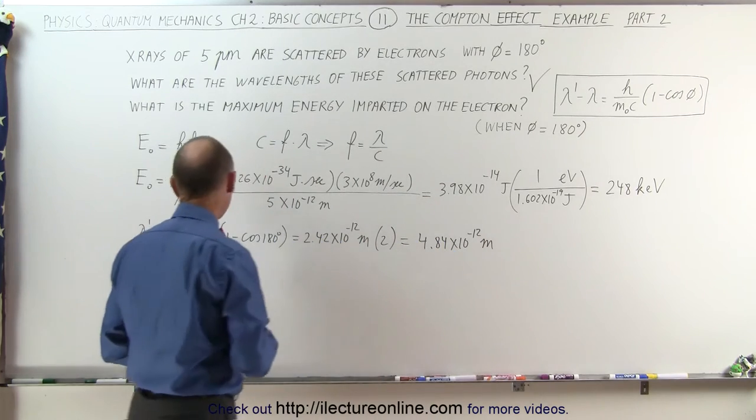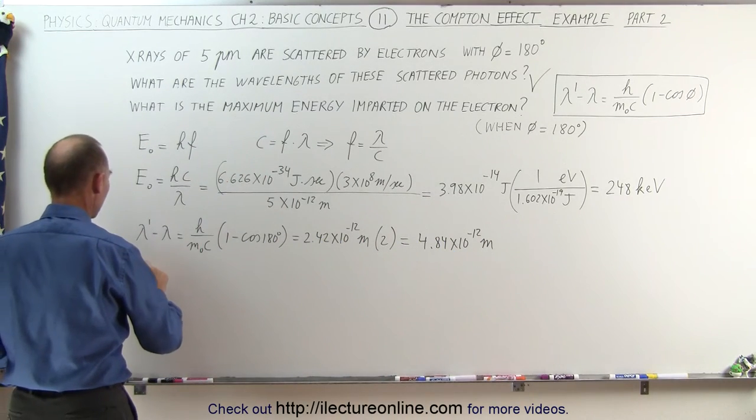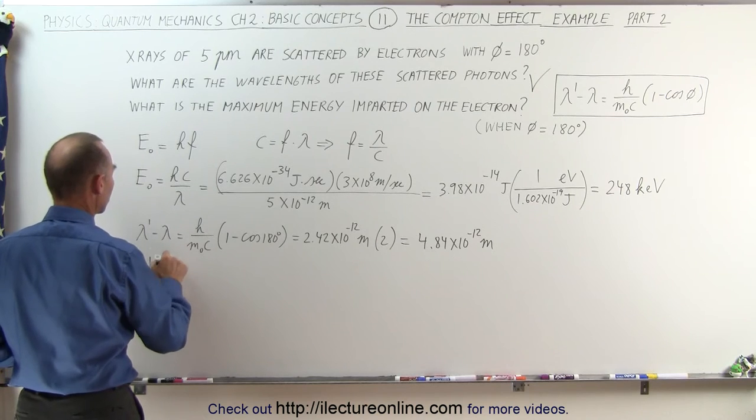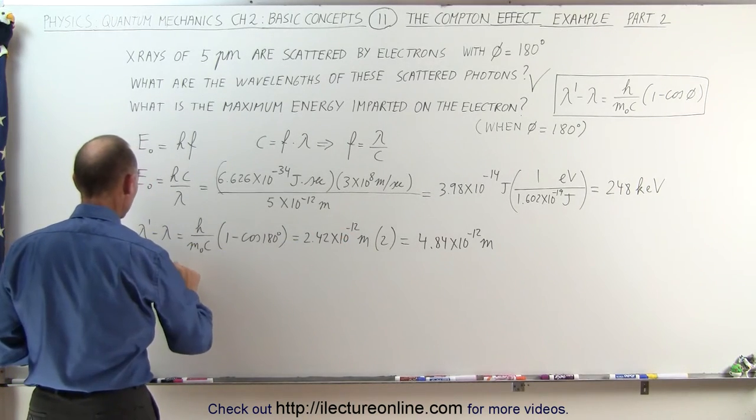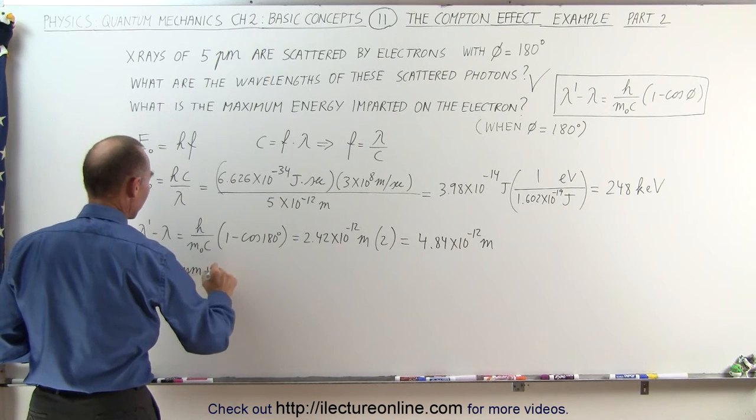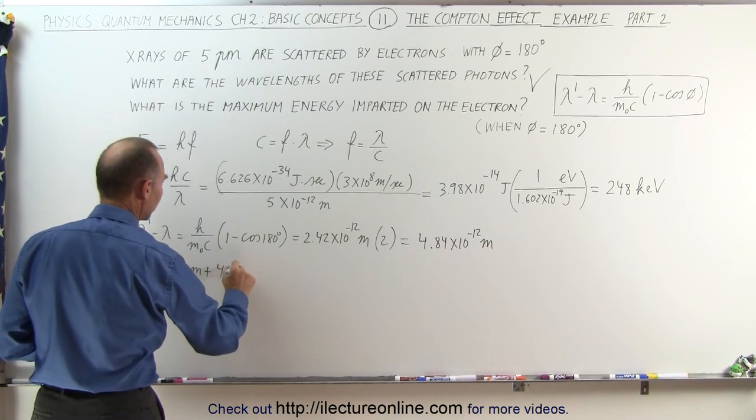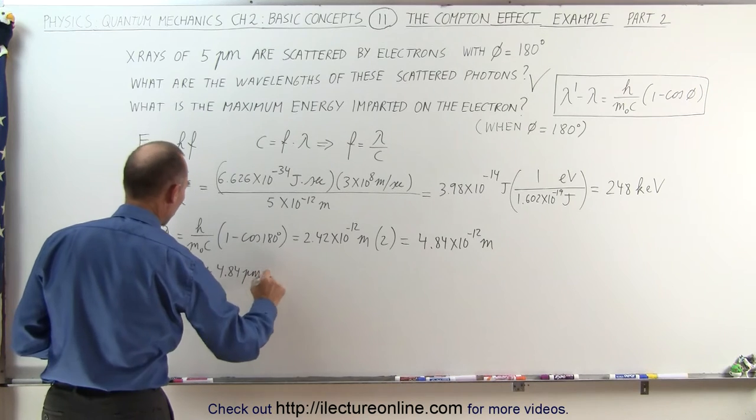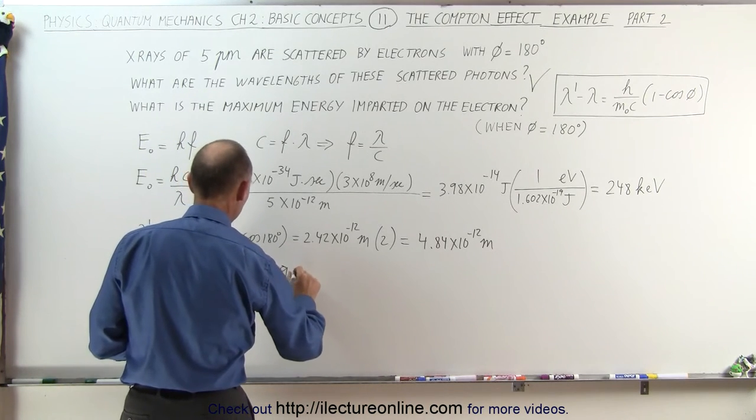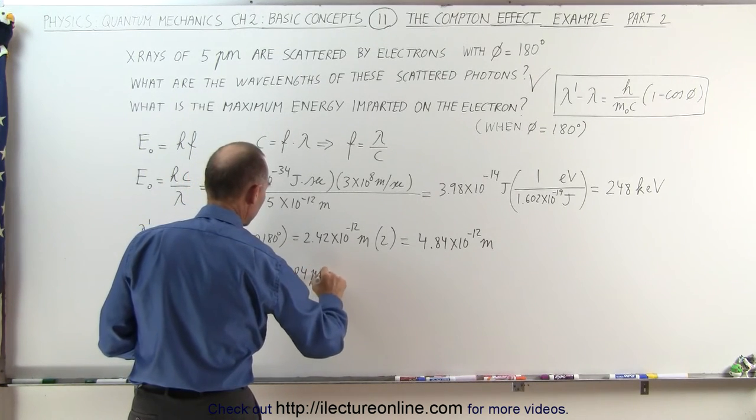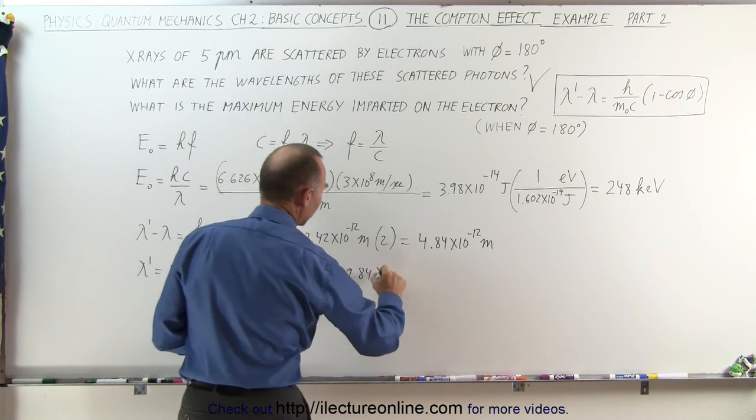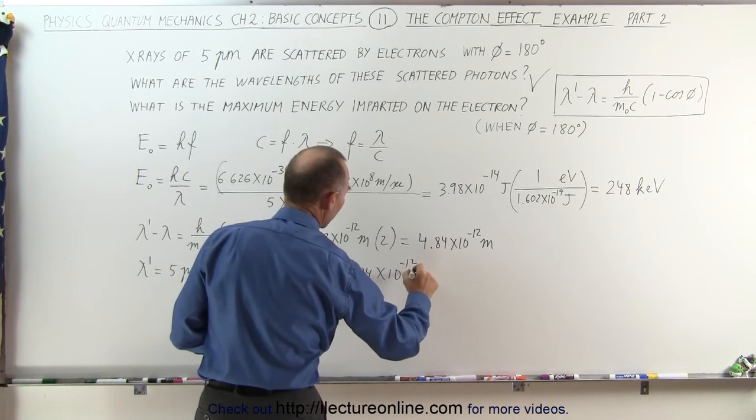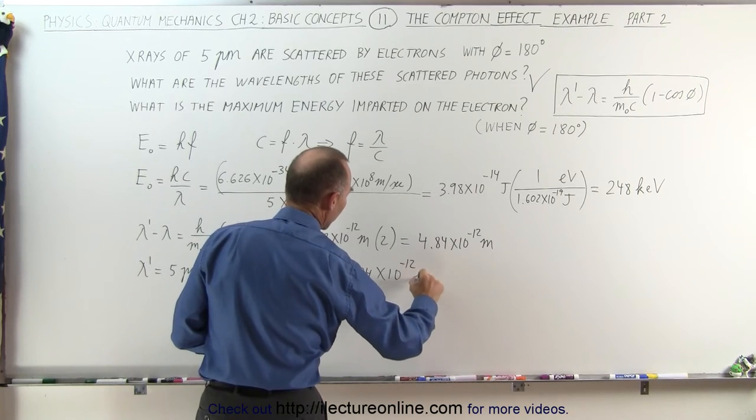So that's the change in the wavelength, which means that lambda prime is going to be equal to this plus that. So add another 5 picometers: that would be 5 picometers plus 4.84 picometers, or a wavelength of 9.84 picometers. Of course that's 9.84 times 10 to the minus 12 meters.